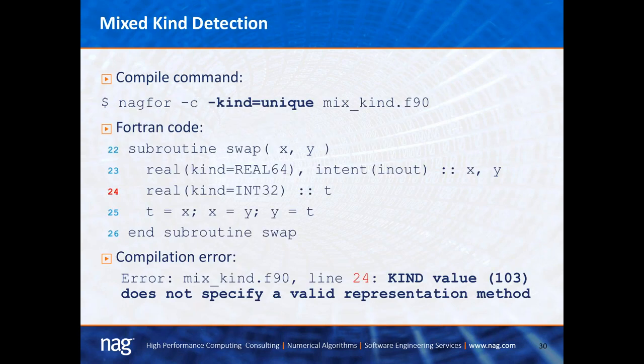The next check in the NAG compiler is checking for kinds. In the example, the swap subroutine at line 22 has dummy arguments declared as real, specifically double precision REAL(64), as shown on line 23. A temporary local variable is declared on line 24, but it uses REAL(KIND=INT32) — INT32 is for integers, not for real. Although some compilers might implement REAL(64) and INT32 the same way, this code is obviously wrong. Compiling it produces: 'line 24, kind value does not specify a valid representation.'